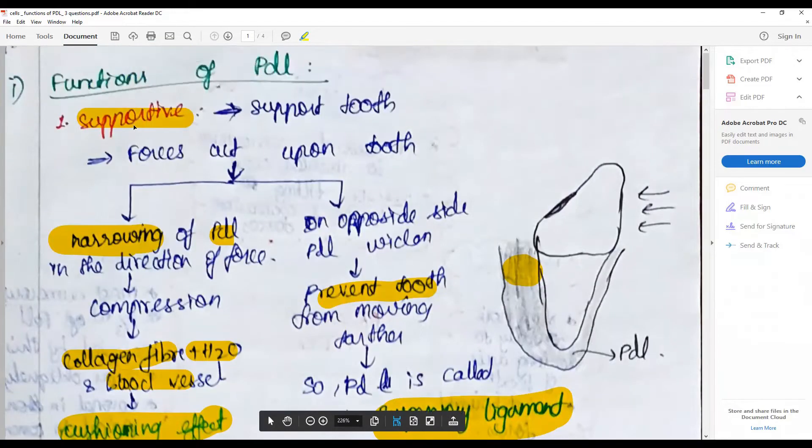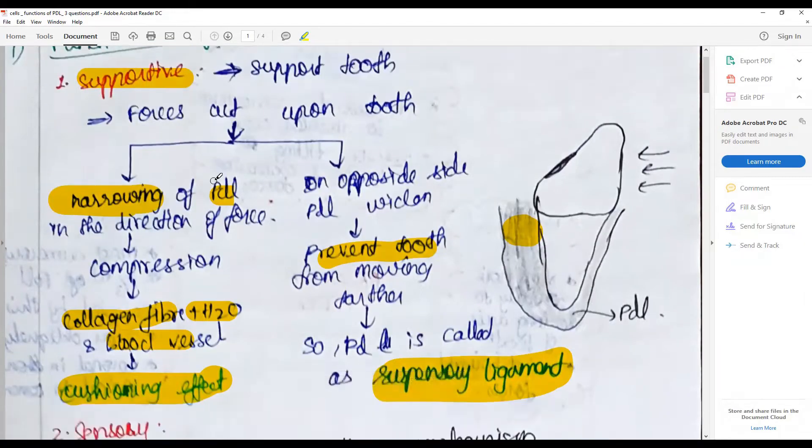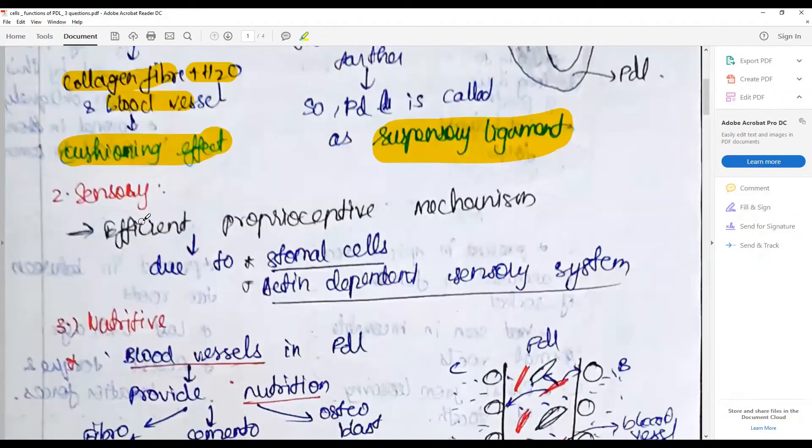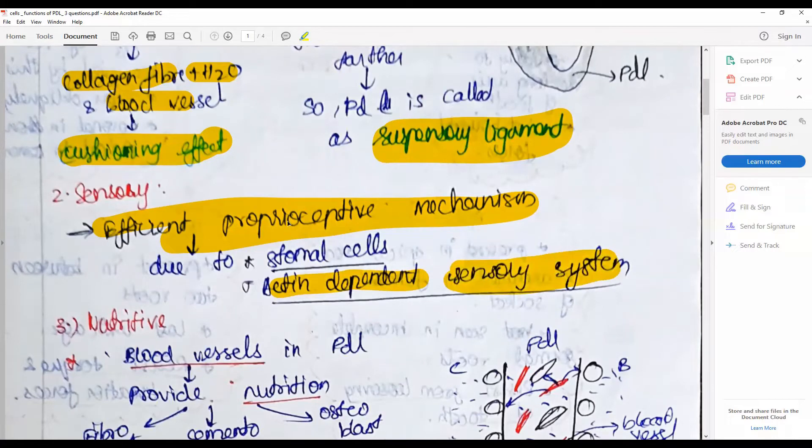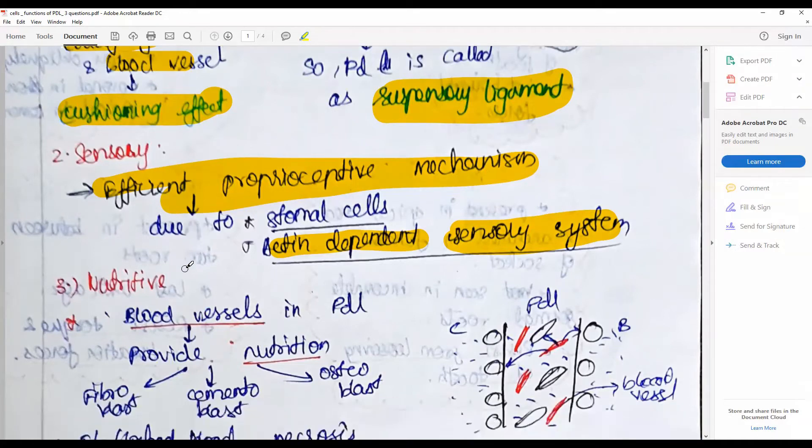Sensory: they have efficient proprioceptive mechanisms due to the stromal cells that are actin-dependent. Through the sensory system, they are able to sense the changes in pressure and convey that to the nerves, to the spinal cord, and the brain, from which they accept the reaction: fight or flight.